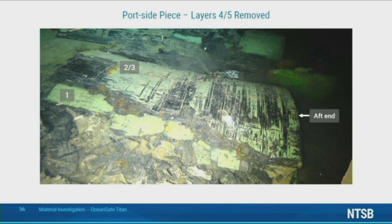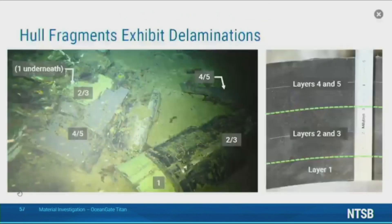Looking at this same piece with the outer shell removed, we see that toward the aft end there's a mixed region where some of the separation took place within the adhesive and some within the adjoining composite layer. At the forward end there's also a square patch of composite material still attached to the surface. Also of note for this piece, the outer shell consisting of layers four and five was fractured through the layers and a chunk of it was missing, which is why the top surface of layer three is visible.